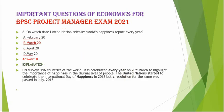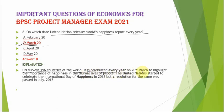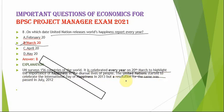The next question is: on which date does the United Nations release the World Happiness Report every year? The correct option is option B — March 20. Every year, March 20 is celebrated as World Happiness Day. The UN surveys 156 countries of the world. It is celebrated to highlight the importance of happiness in the lives of people. The United Nations started celebrating the International Day of Happiness in 2013, but a resolution for the same was passed in July 2012.